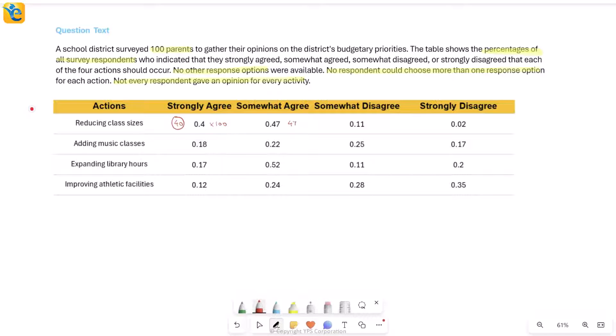Similarly, for the other responses, somewhat agree is 47 parents, 11 parents somewhat disagree, and 2 parents strongly disagree. If you add all of these numbers, this is 87. 87 plus 11 is 98, 98 plus 2 is 100. So in this case, I have responses from all 100 parents.